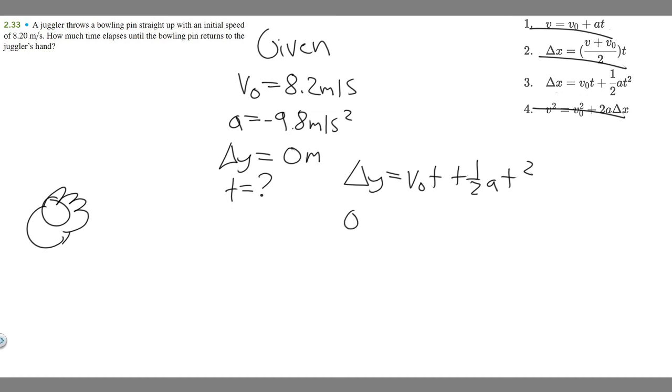So delta y we know is zero equals v sub zero, which is 8.2 times t plus one half times a, and we know a, it's going to be minus 9.8 times t squared.